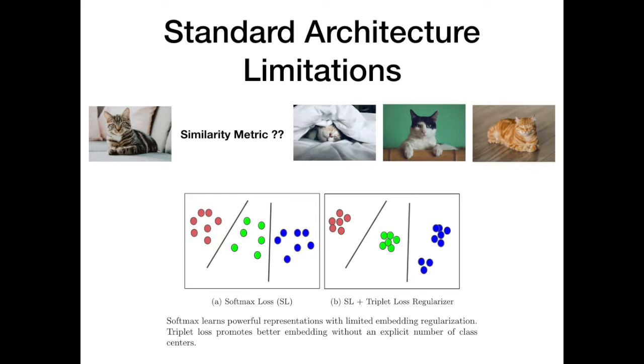However, they cannot quantify similarity between objects within the same class. In addition, the softmax loss promotes neither class compactness or inter-class margin maximization.